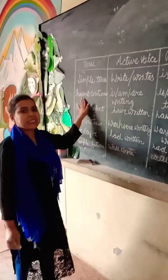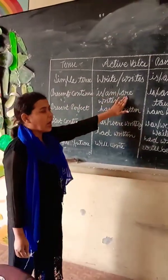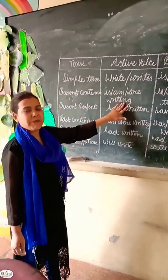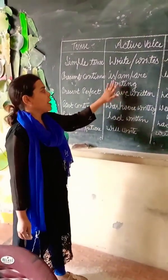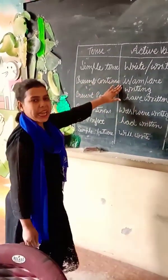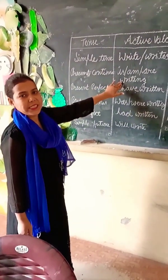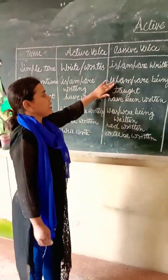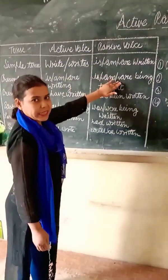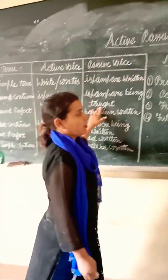Now, in present continuous tense, is/am/are will be there and we will be adding -ing with the verb first form. When we convert to passive, is/am/are will be there and we will use 'being' plus the verb third form.